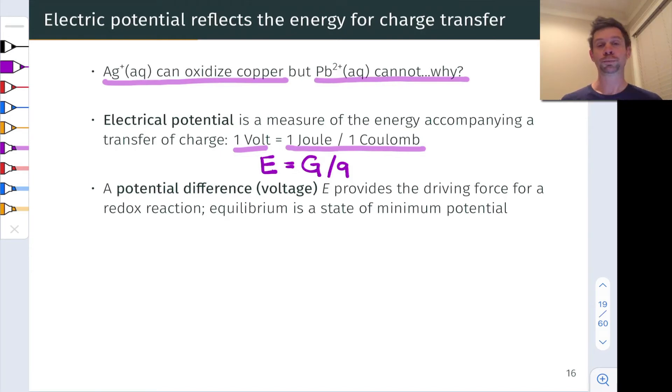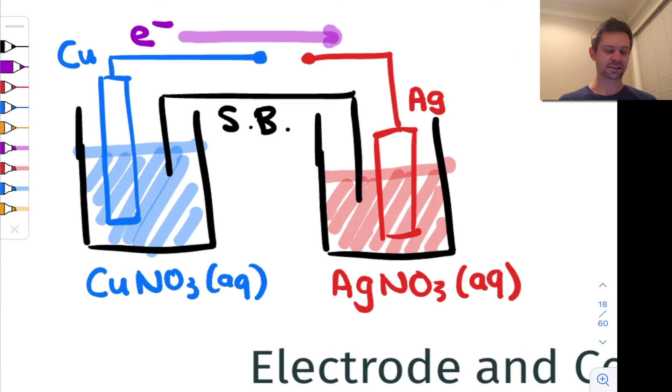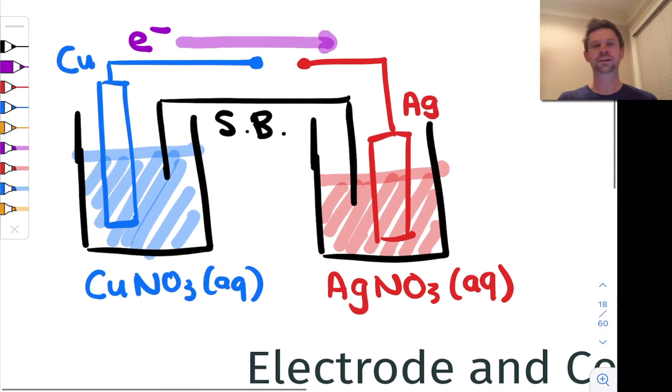Now electrical potential for a half cell in isolation doesn't really have any physical meaning since if we think about a typical galvanic cell here we can't just send electrons into oblivion. So the potential of a copper half cell kind of has no meaning in and of itself.